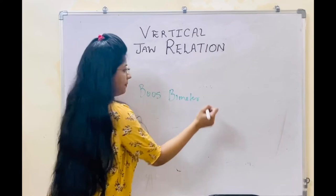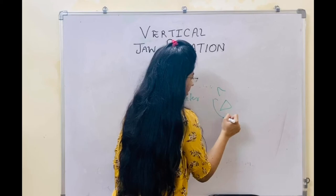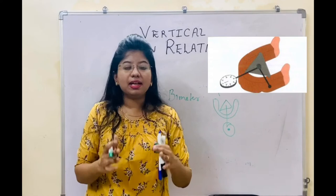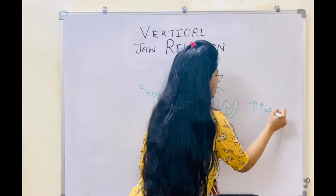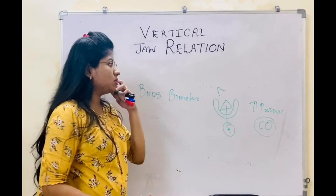The Boos Biometer method uses a central bearing plate on one rim and a meter attached to the mandibular rim. When the patient closes with the highest pressure on the Boos Biometer, that is the condition of centric occlusion. So the highest pressure reading on the Boos Biometer indicates that your patient is closing in centric occlusion. This method is used to determine vertical dimension at occlusion.